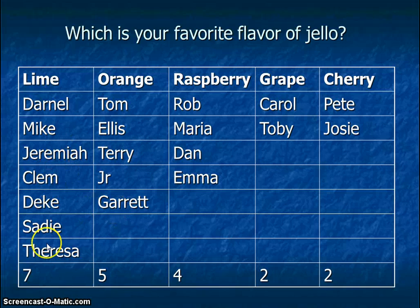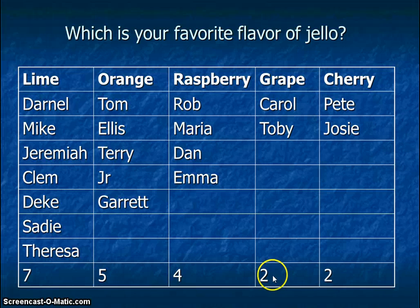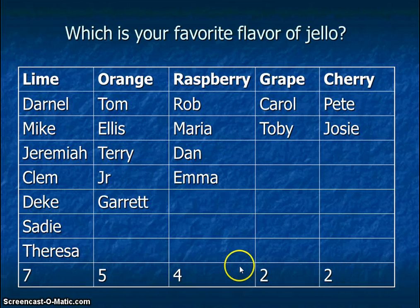And then when you get done, you tally them up at the bottom — like I did here with a seven, a five, a four, a two, and a two. You need to have a total of 20 names on there before you are done with this part. Go for it.